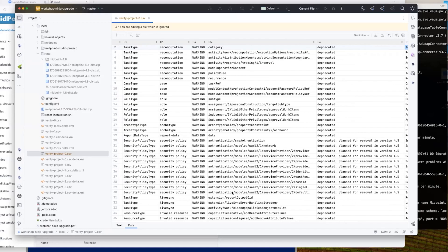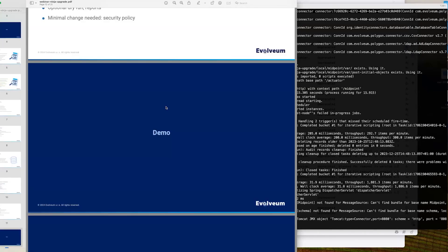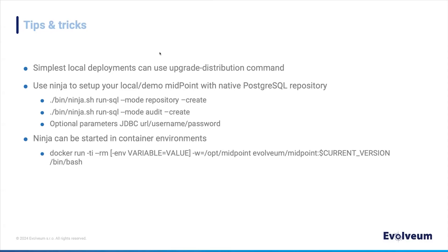This is probably the end of our demo. Let's jump to the tips and tricks. Simple local deployments can make use of the `upgrade distribution` command because it does three steps in one. If you have a local demo, POC, or something you don't worry too much about, this should be pretty safe. It will save you searching for a new distribution, searching for SQL scripts, updating the schema, connecting to the database, updating files, etc.